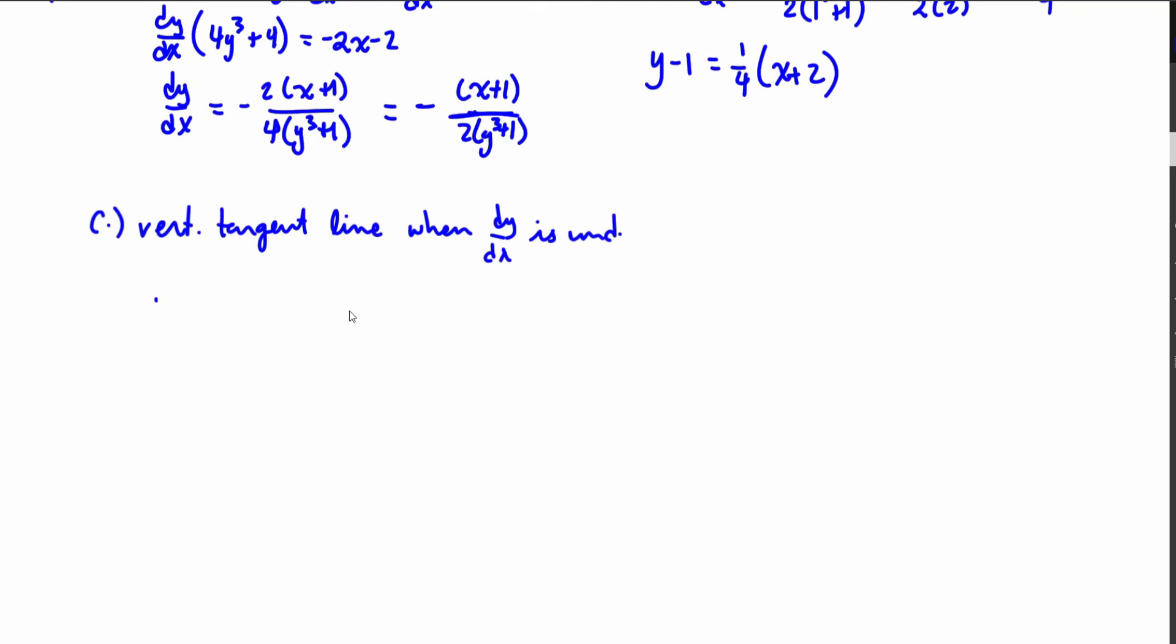So when is this going to be undefined? That's where that denominator right here, and again we didn't need to complete part a because we can just use that equation, but we're going to take that denominator, we're going to set that equal to zero because that's where it's going to be undefined, where we're dividing by zero.